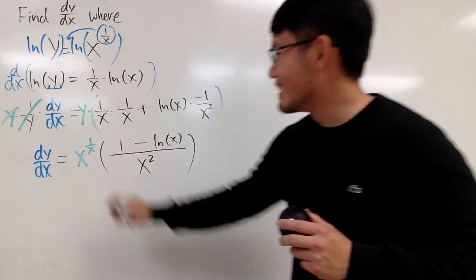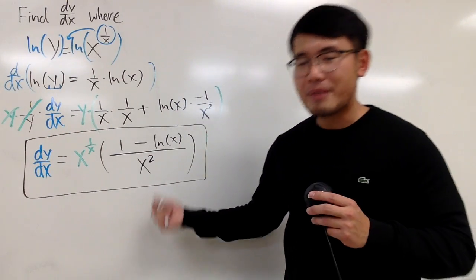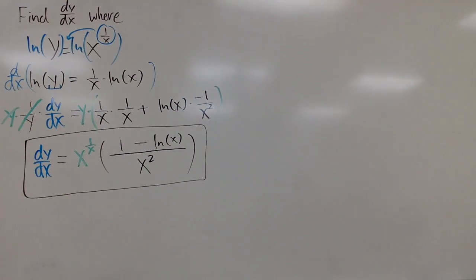We're done. This is the derivative of x to the 1 over x power. Thank you.